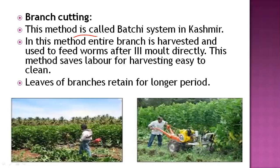The next method is the branch cutting method, also called the 'batch system' in Kashmir. In this method, the entire branch is harvested and used to feed the larvae or worms after the third to fourth instar stage, when the larvae are molting. This method saves labor since there is no need to pick individual leaves — the whole branch is given directly. The branches are also retained for a longer period in the rearing room.